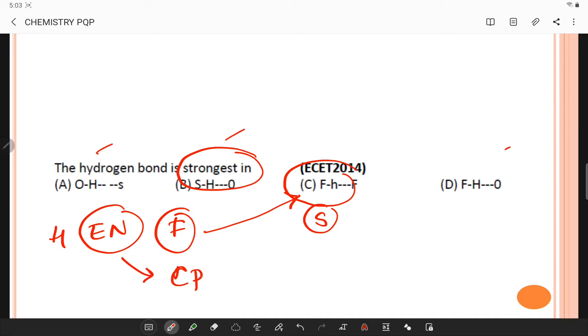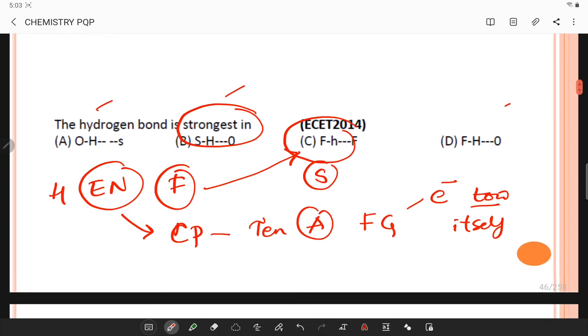Electronegativity is a chemical property that describes the tendency of an atom or a functional group to attract electrons towards itself. Electronegativity of an atom is affected by both its atomic number and distance that its valence electrons reside from the charged nuclei.